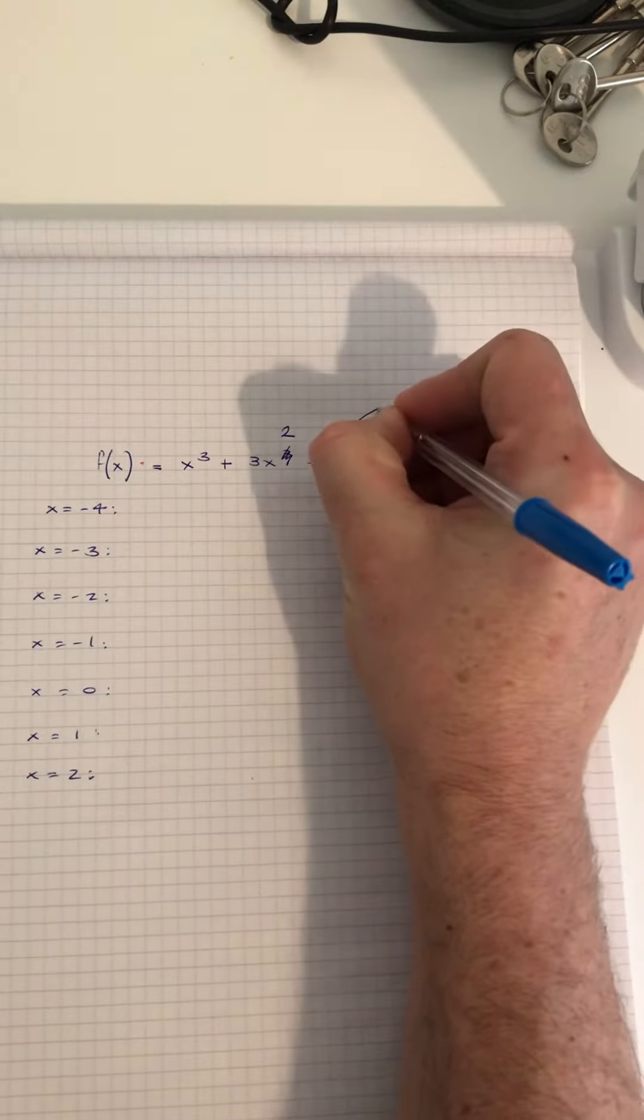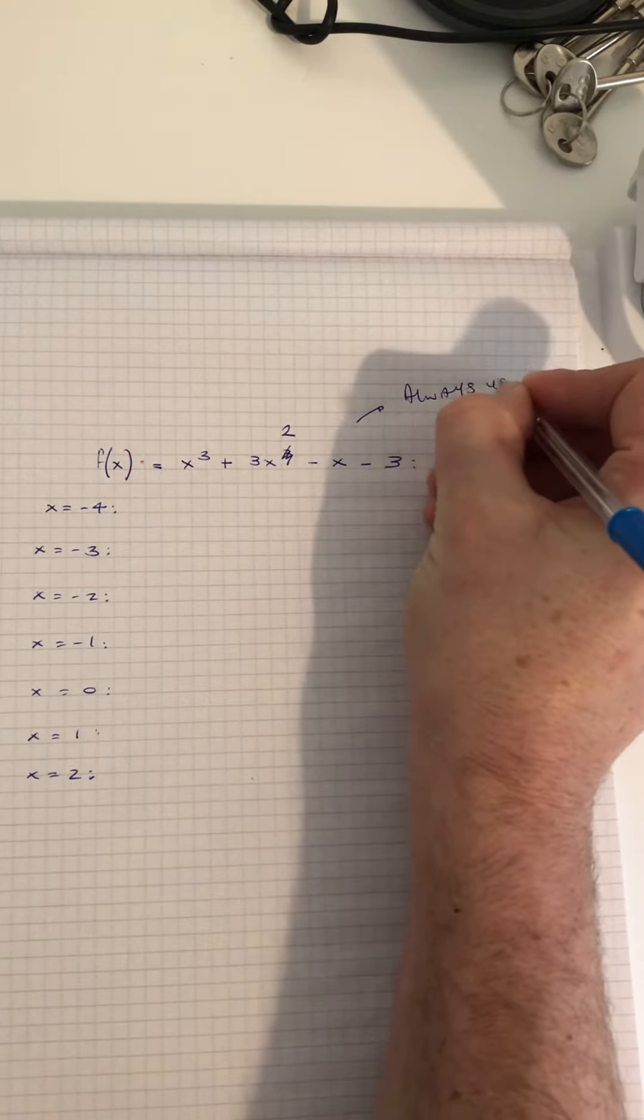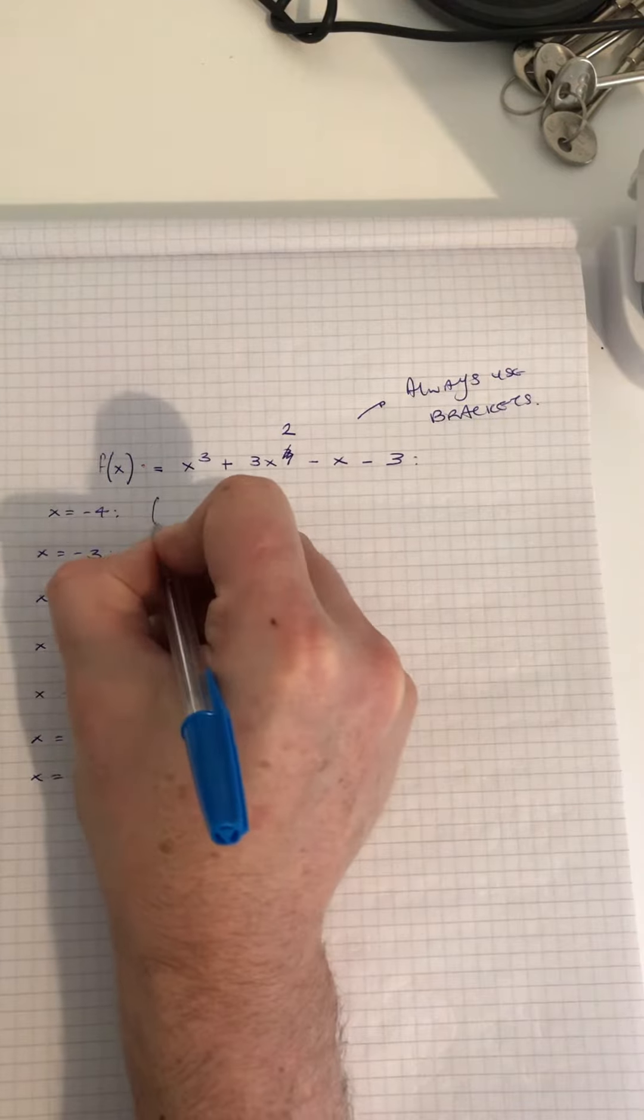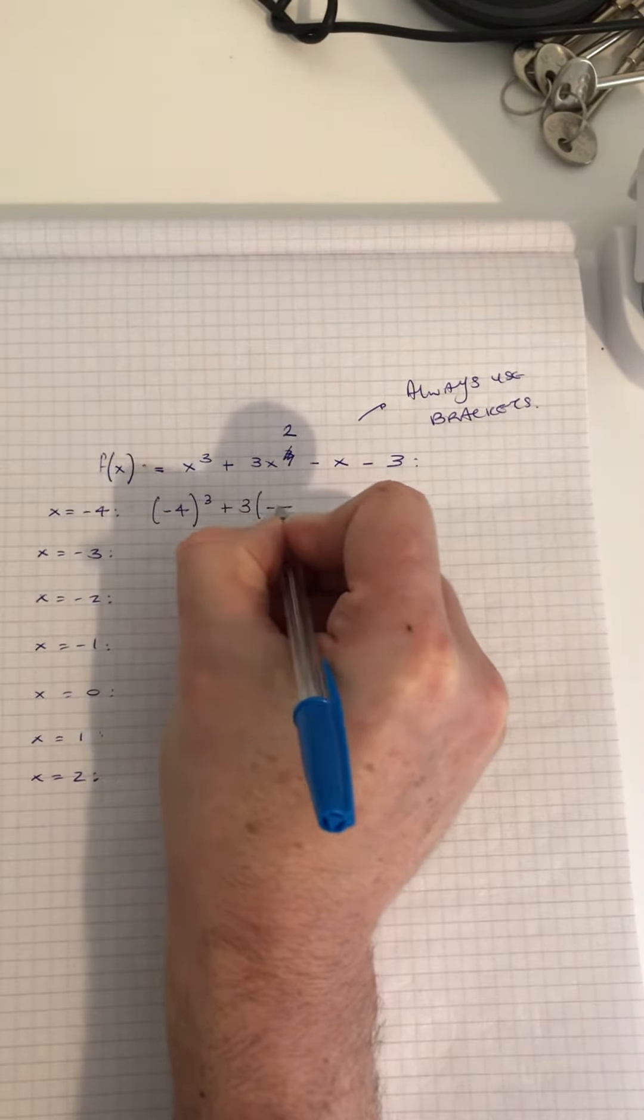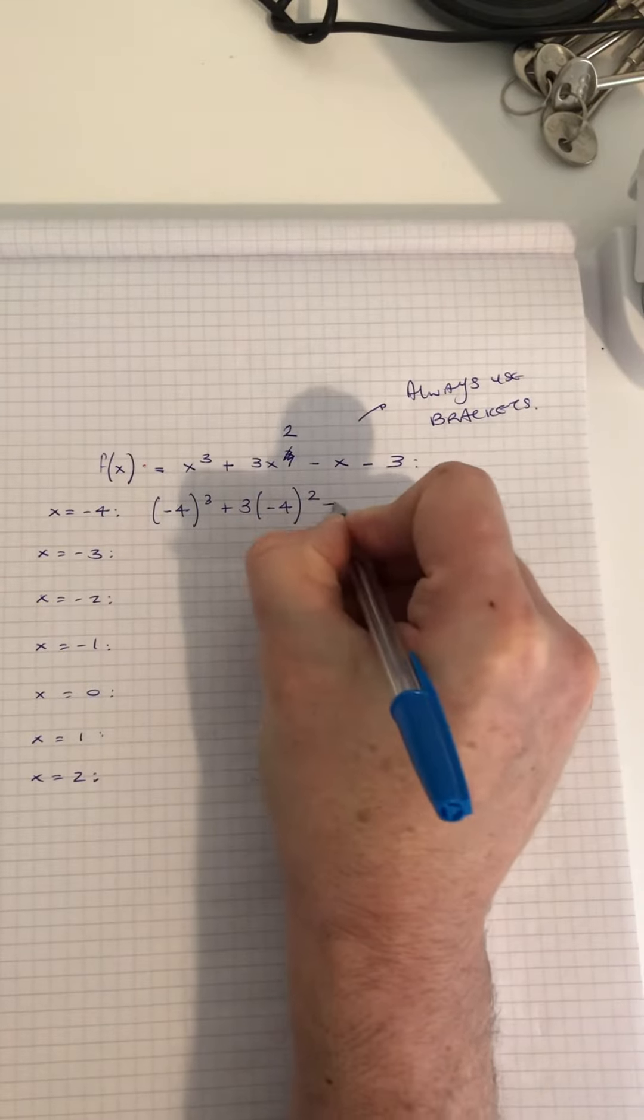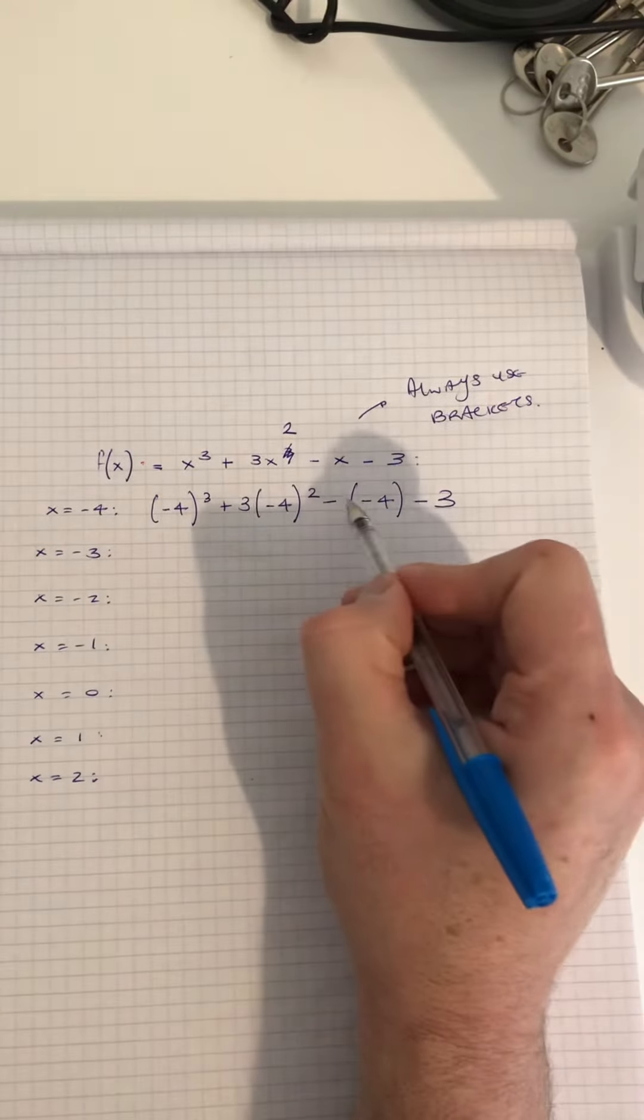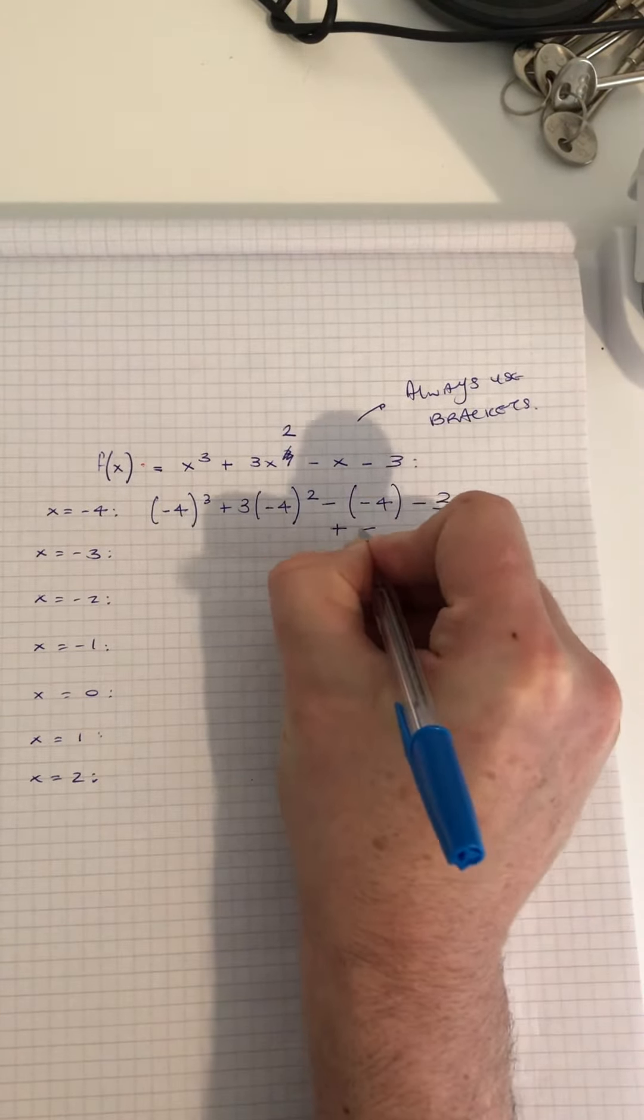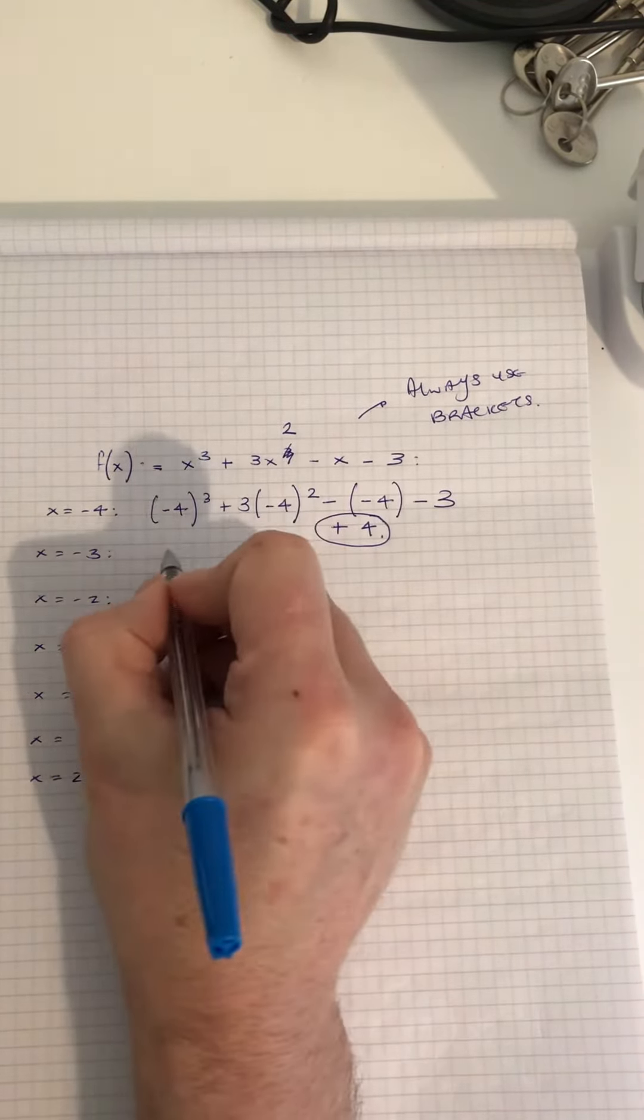Okay, always use brackets. So just watch the minus 4. When you substitute minus 4 cubed plus 3 times minus 4 squared minus in brackets minus 4 minus 3. Now why the brackets are important here is because a minus and a minus gives you plus 4. Okay, so just watch here for a minute.